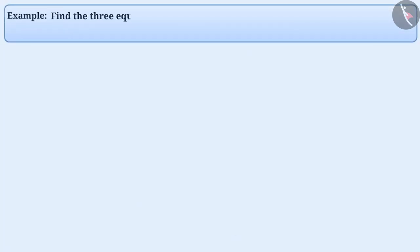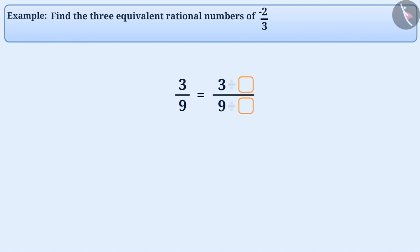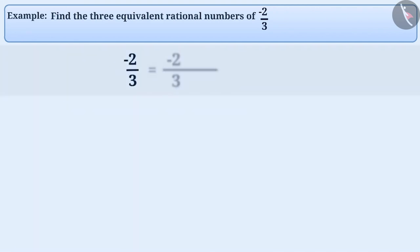Example 2: Find the three equivalent rational numbers of minus 2 by 3. To find the equivalent rational number of any rational number, we multiply or divide its numerator and denominator by the same non-zero number. Usually it is easy to multiply with any number. On multiplying the numerator and denominator of minus 2 by 3 by 2, we get the rational number minus 4 by 6.